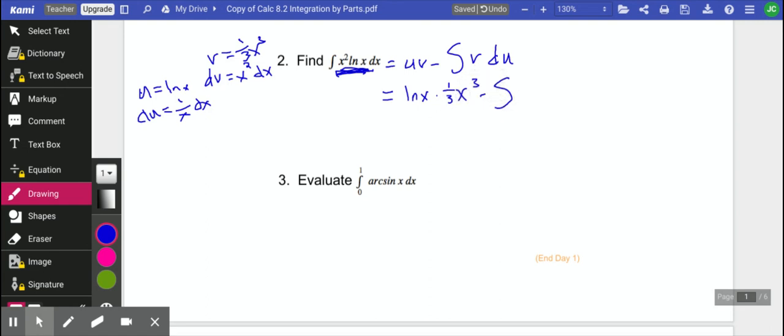And then v, we have 1 third x cubed. And du is 1 over x dx. Let's clean this up.